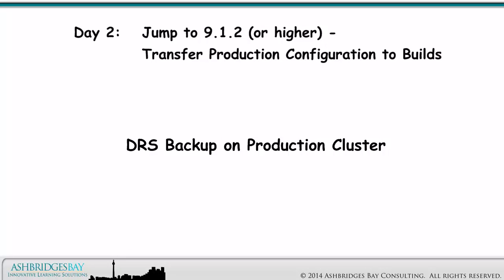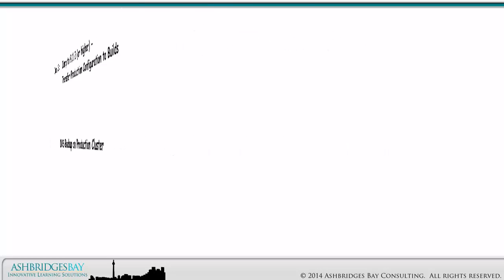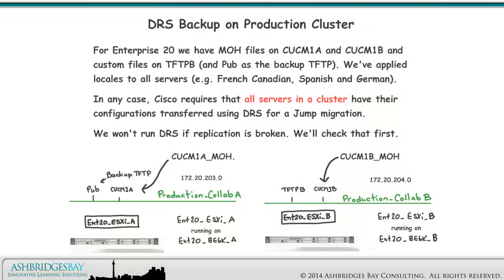Now we can do a DRS Backup on the Production Cluster. For Enterprise 20, we have MOH files on CUCM1A and CUCM1B and custom files on TFTPB and pub as the backup TFTP. We've applied locales to all servers — for example, French Canadian, Spanish, and German. Cisco requires that all servers in a cluster have their configurations transferred using DRS for a jump migration. We won't run DRS if replication is broken — we'll check that first.